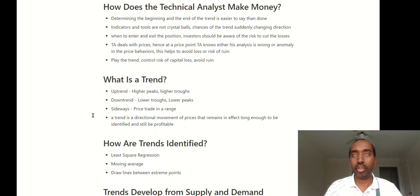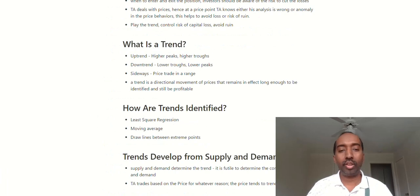Significant points. What is a trend? There is upward trend, downward trend, and sideways trend. In a couple of minutes, stick to the video. I will practically present what is upward trend, how to identify upward, downward, and sideways trends. A trend is a directional movement of price that remains in effect long enough to be identified and still be profitable.